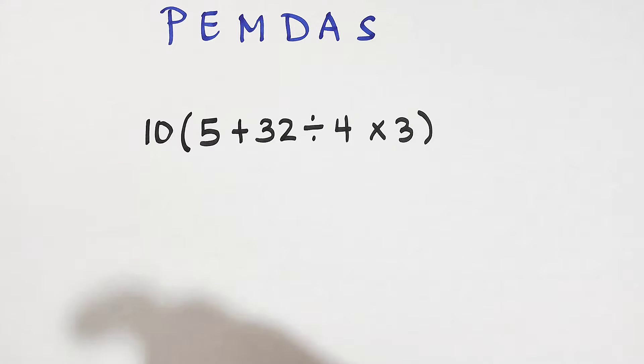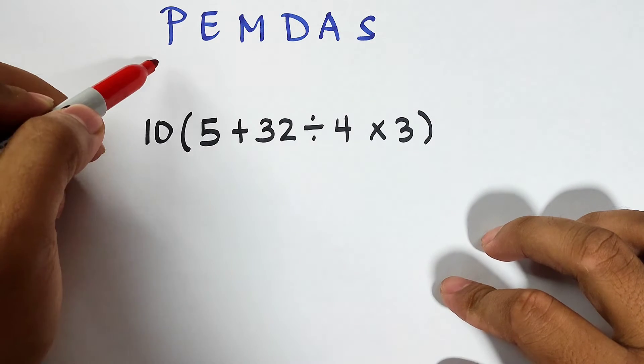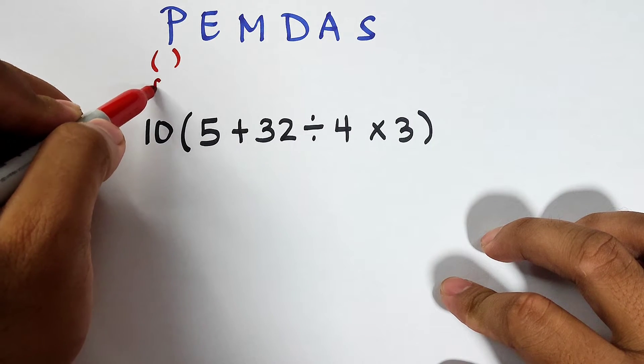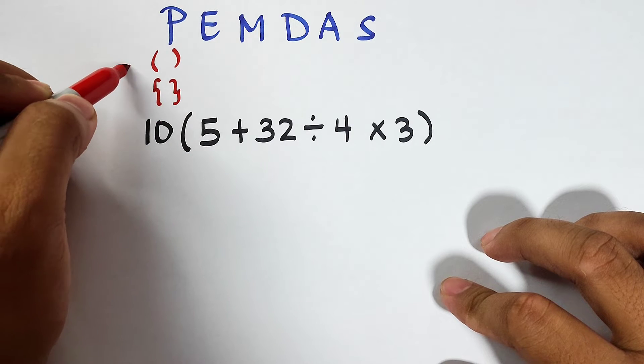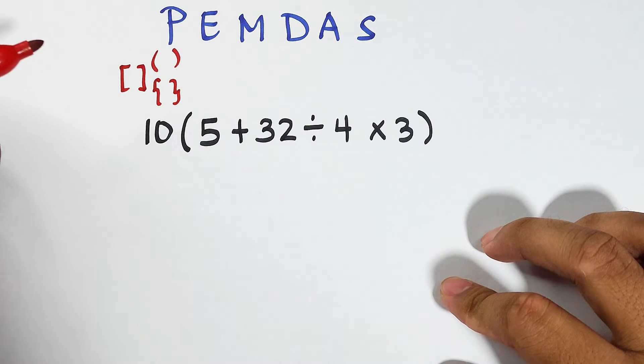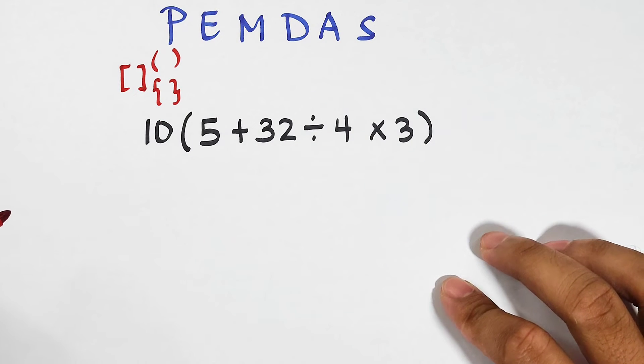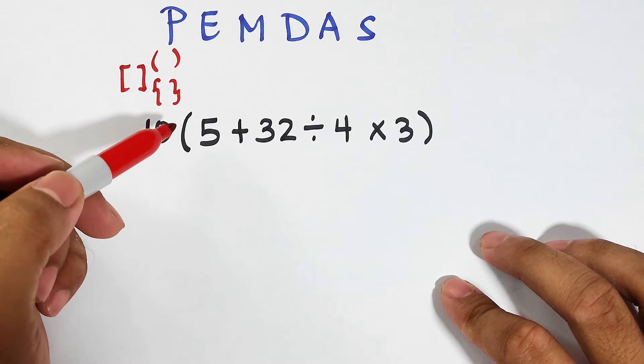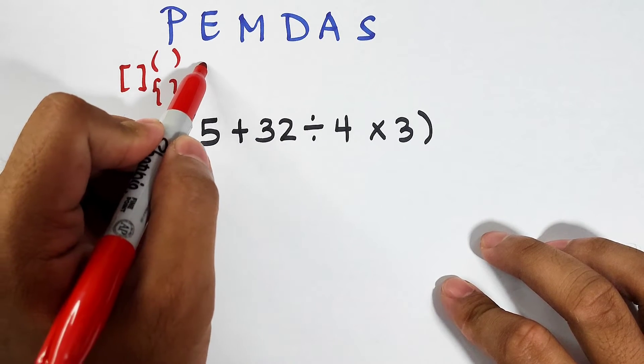So your P stands for the parentheses or the grouping symbols. When you encounter this kind of symbol, this one or maybe this one, those are the grouping symbols under the parentheses. Next, what about E? Exponents. You can encounter this kind of expression or this expression.